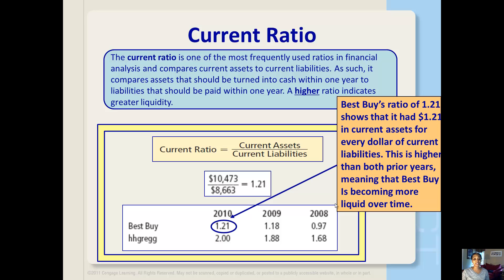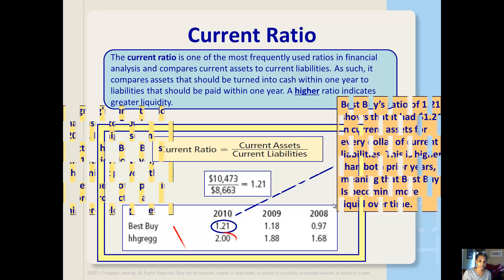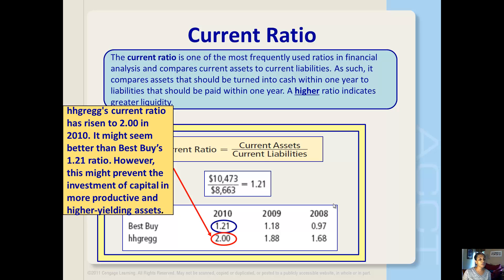What that also means is that if the current ratio is less than one, then you've got more liabilities than you have assets, and that's a dangerous place to be. Best Buy has a ratio of 1.21, so it means they've got $1.21 in current assets for every dollar of current liabilities.